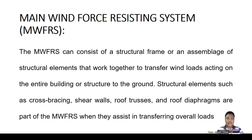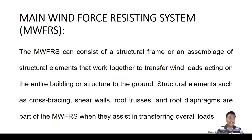Some examples of MWFRS — the system that resists the main wind force — include cross bracing, shear walls, and roof trusses. If your roof truss is part of a gable frame and the whole gable frame is the system that resists the main wind, then that roof truss is part of the MWFRS.